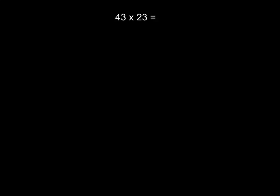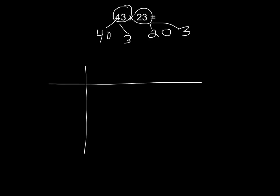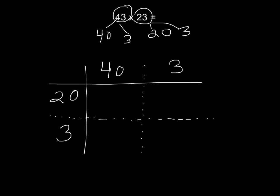As the numbers get bigger, like in our example 43 times 23, we can use the partitioning strategy to help us answer this question. To use the grid method, we need to break apart both numbers. So we're going to break apart 43 into 40 and 3, and 23 into 20 and 3. Let's use the grid method again — 20 and 3, 40 and 3. To help us keep our numbers separate, we can divide up our grid. As you will see, we now have 4 quadrants that we will be finding answers for.